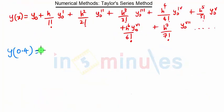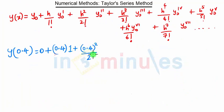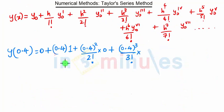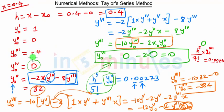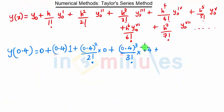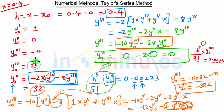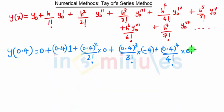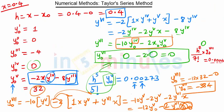So y(0.4): y0 is 0.4, y0' is 1, so we have 0.4 squared upon 2 factorial. y0'' is 0, so that term vanishes. Then h cubed, that is 0.4 cubed upon 3 factorial, times y0''' which is minus 4. Then h to the 4th, that is 0.4 to the 4th upon 4 factorial, times the fourth derivative which is 0. Then 0.4 to the 5th upon 5 factorial times the fifth derivative, which is 32.